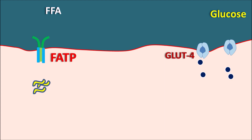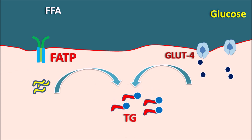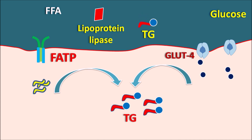Inside the adipocytes, glucose is converted to glycerol and combines with free fatty acids to form triglycerides, increasing lipogenesis. Lipoprotein lipase also cleaves plasma triglycerides, releasing free fatty acids that are then taken up into adipocytes, further increasing lipogenesis. In this way, pioglitazone reduces free fatty acid and glucose levels in the plasma, increasing insulin sensitivity and allowing glucose levels to be adequately controlled.